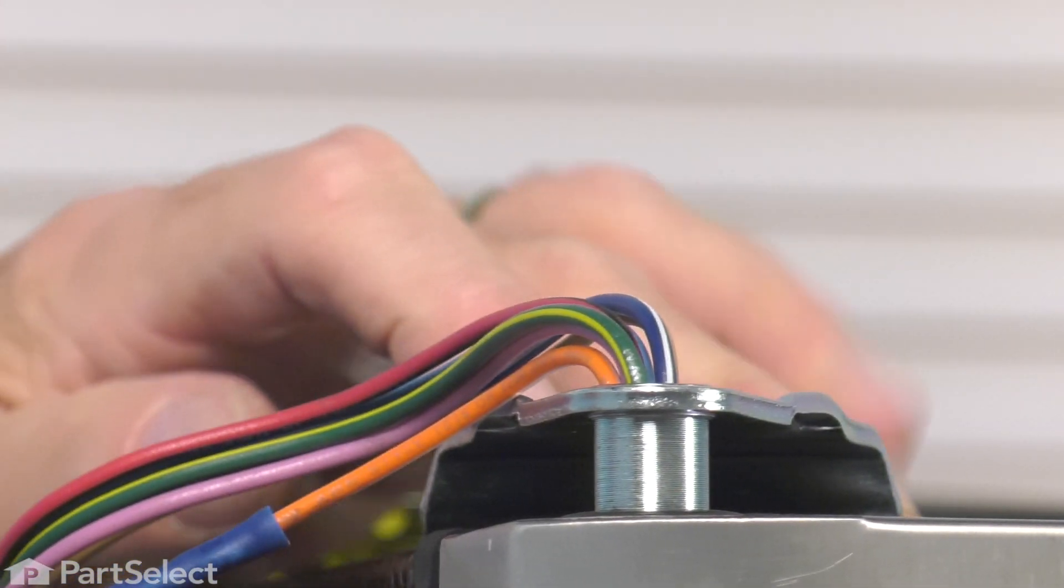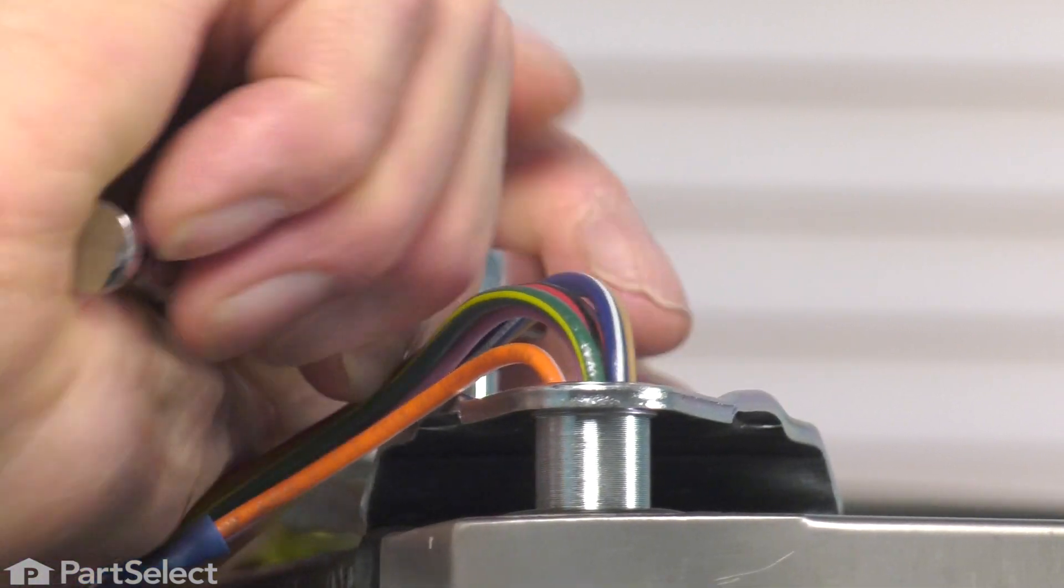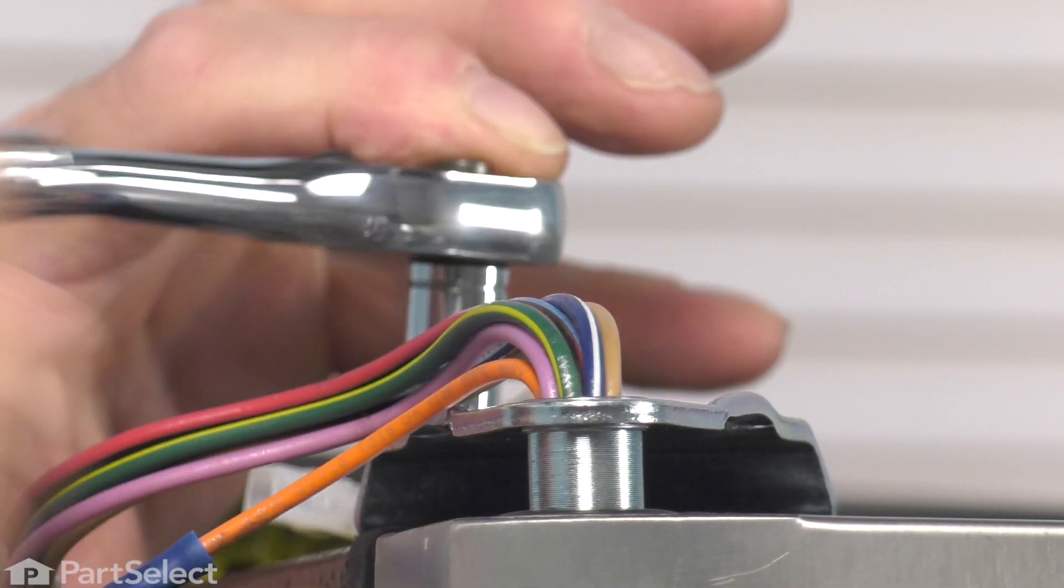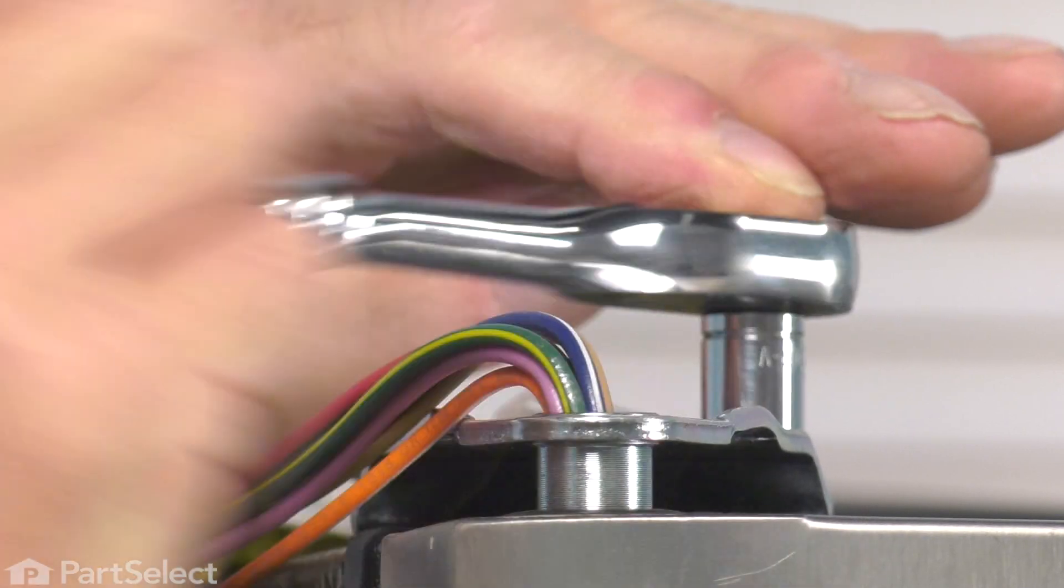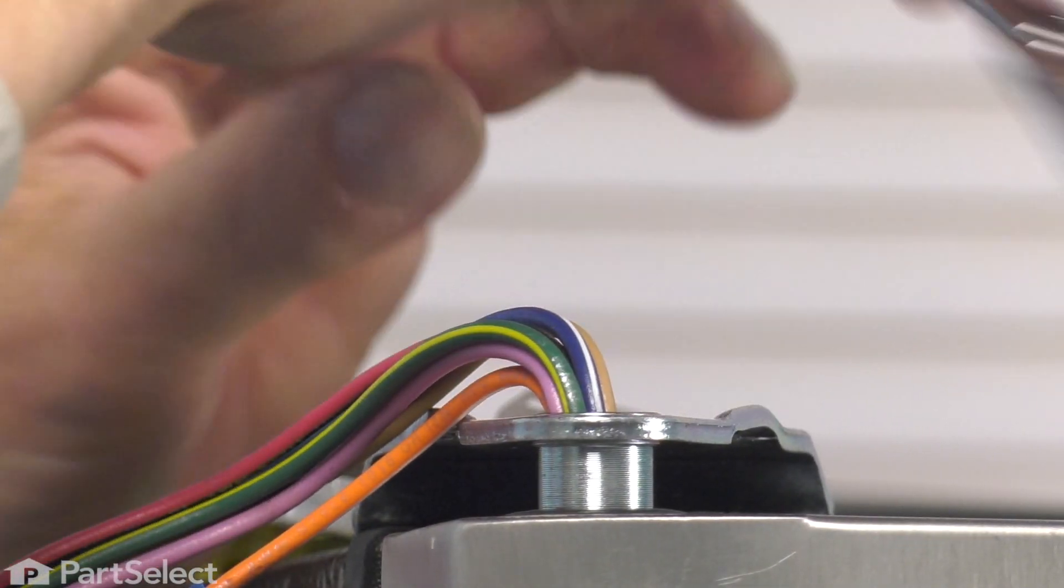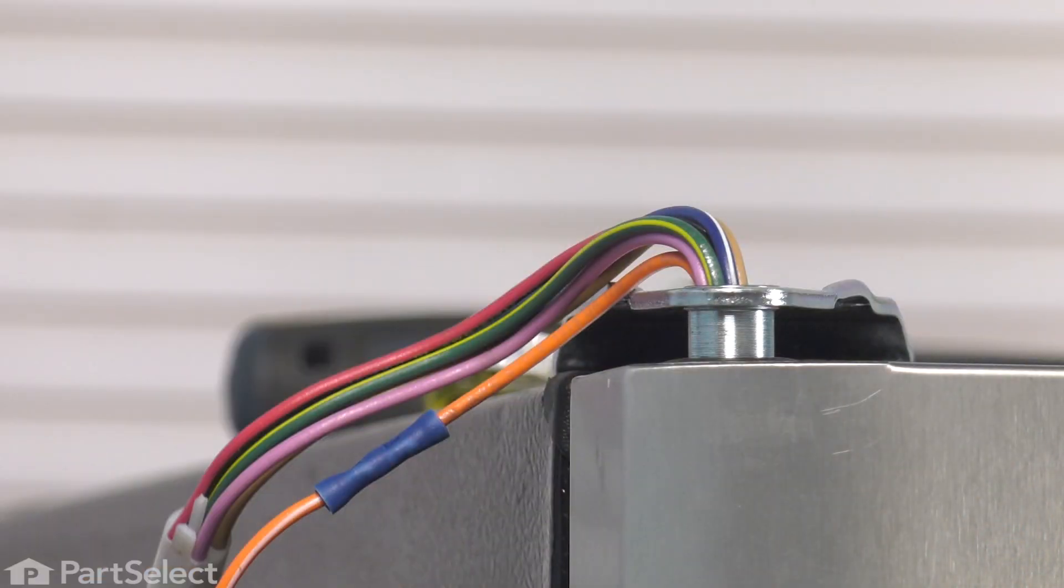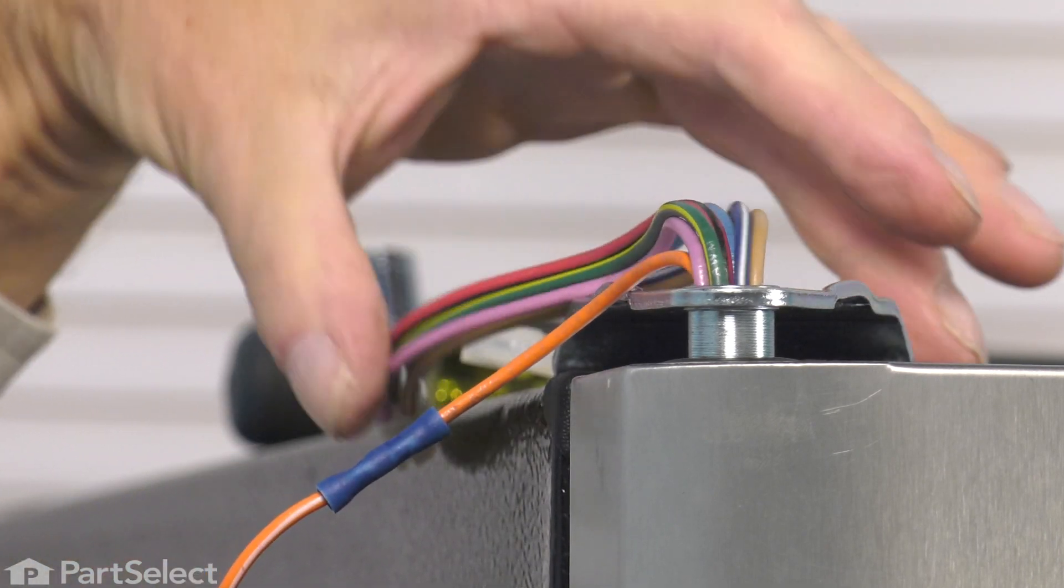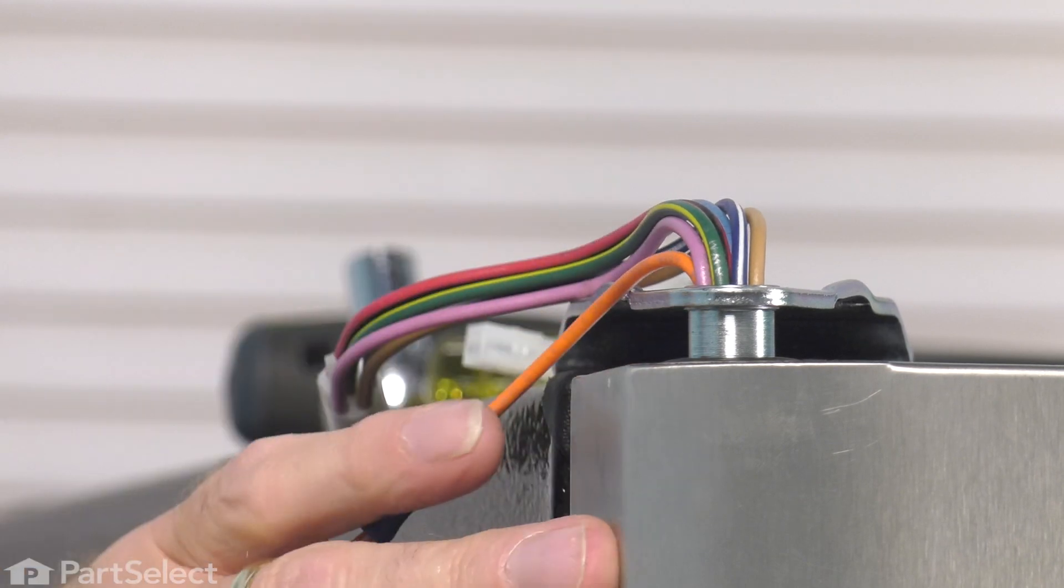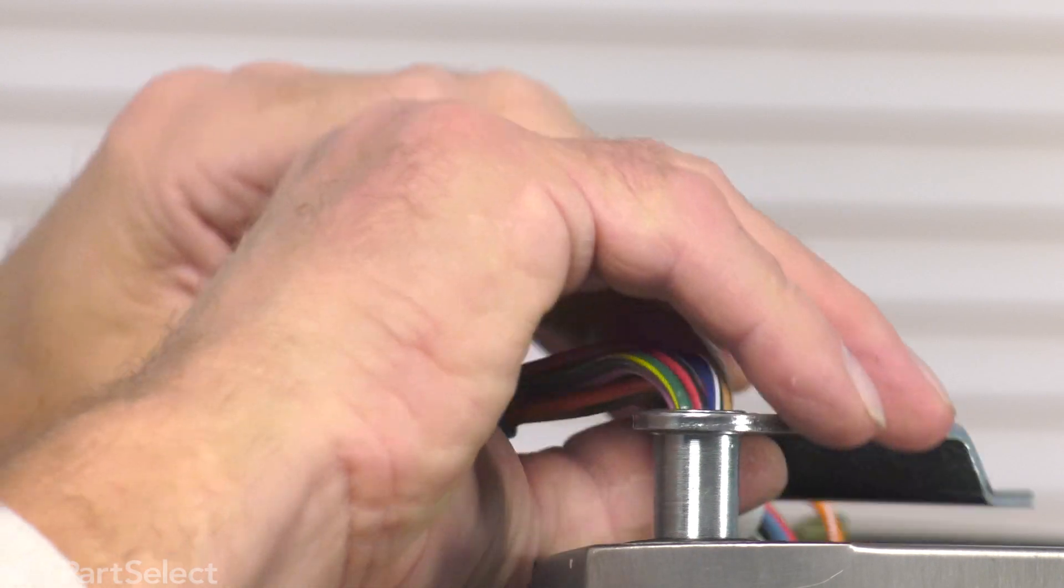Next, we're going to remove the hinge bolts. These bolts are typically a three-eighths inch hex head bolt. Now, we'll need to lift that hinge off of the cabinet, pull it out of the hinge bushing on top of the door, and then we'll try to feed that harness down through the opening in the hinge.